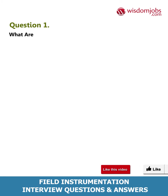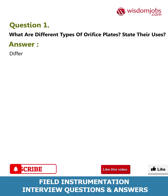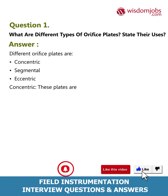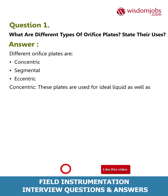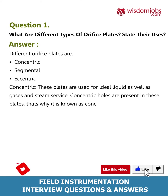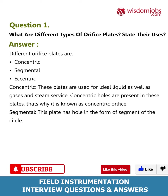Question 1: What are different types of orifice plates? State their uses. Answer: Different orifice plates are concentric, segmental, and eccentric. Concentric plates are used for ideal liquid as well as gases and steam service. Concentric holes are present in these plates, which is why it is known as a concentric orifice.